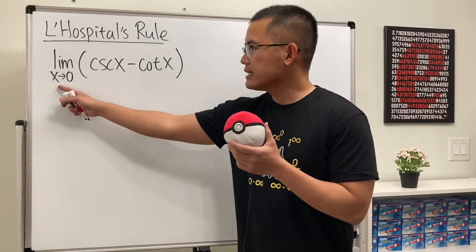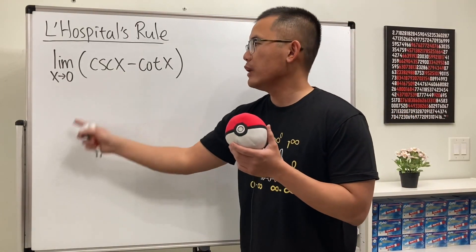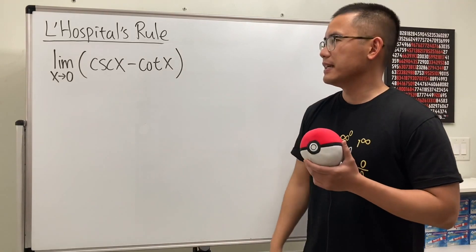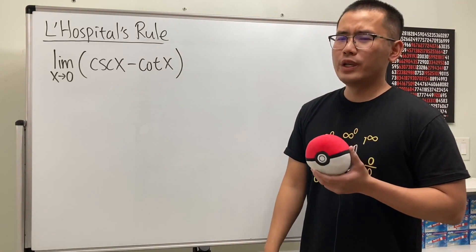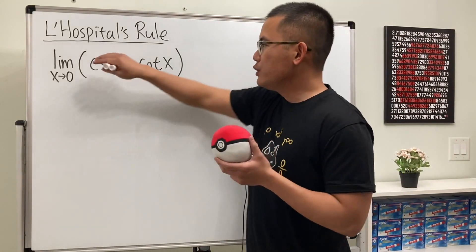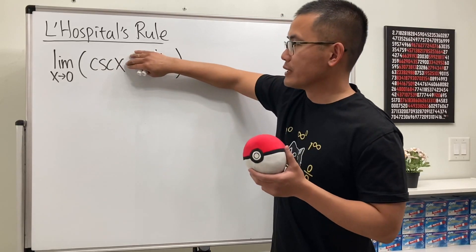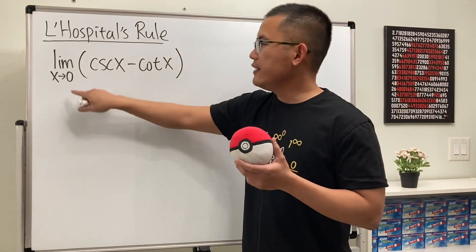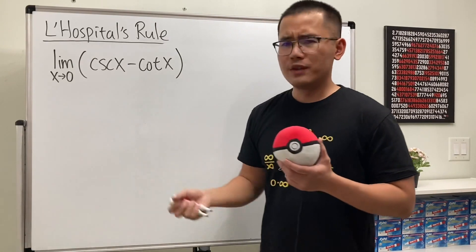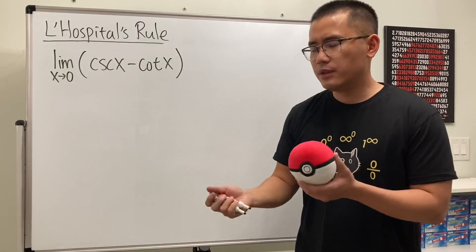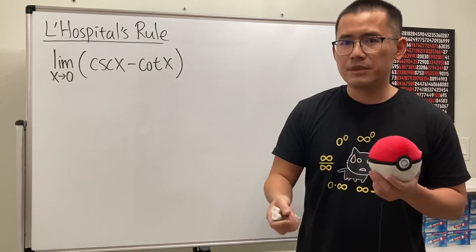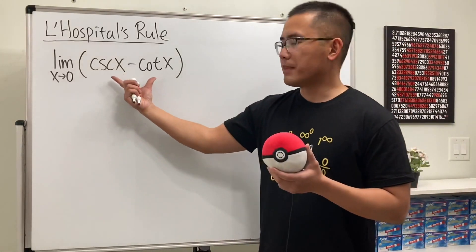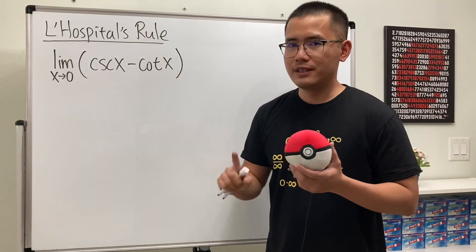Here we have the limit as x approaching 0 of cosecant x minus cotangent x. This is going to be a pretty weird one at first, because if you just look at cosecant x, which is 1 over sin x, and if you put 0 into there, you get 1 over 0. So you should consider the left and right limits. But don't worry about that yet — let's actually combine these two first.